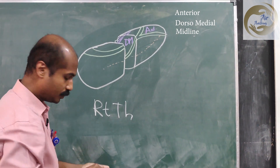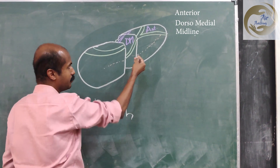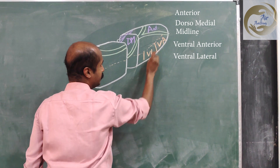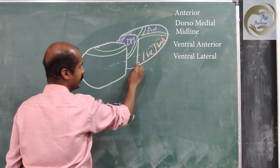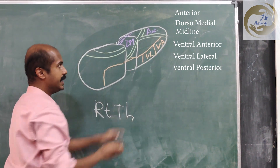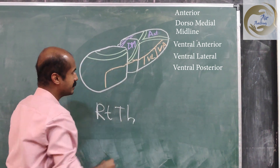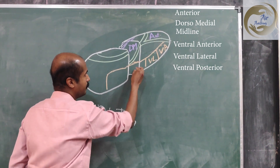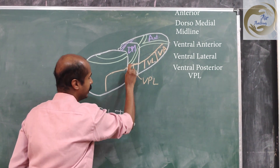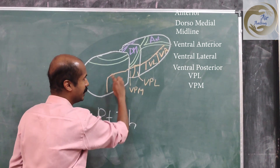In the lateral group, below the dotted line is the ventral tier, and above it is the dorsal tier. In the ventral tier, naming each nucleus: you have a ventral anterior (VA) nucleus, a ventral lateral (VL) nucleus, and a ventral posterior (VP) nucleus. The cut has gone through the ventral posterior nucleus, and on the cut surface you can see it has two parts — ventral posterior lateral (VPL) and ventral posterior medial (VPM).